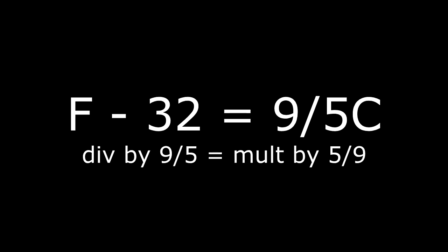First, we're going to subtract both sides by 32. You're left with F minus 32 equals 9 fifths C. Now, you see a 9 fifths next to the C. It's not a whole number, but you can still divide by 9 fifths. Dividing by 9 fifths, if you remember dividing fractions, is the same as multiplying by 5 ninths.